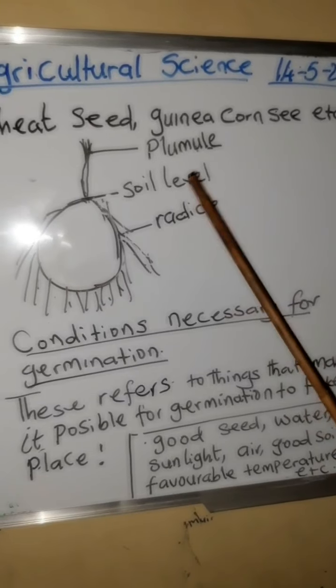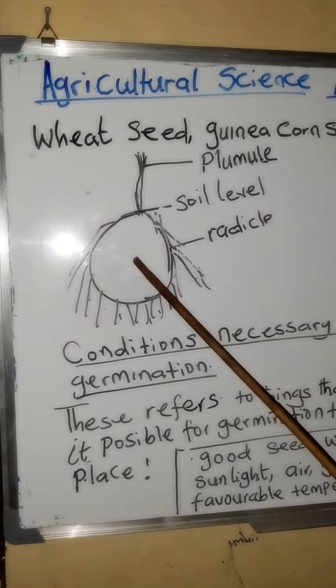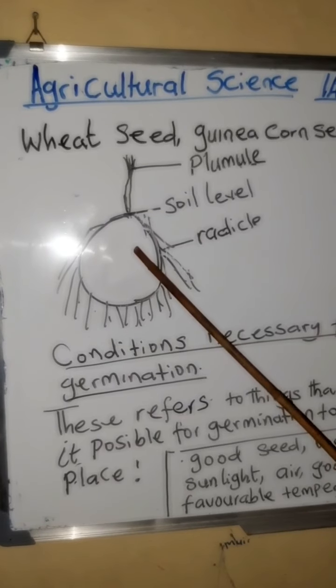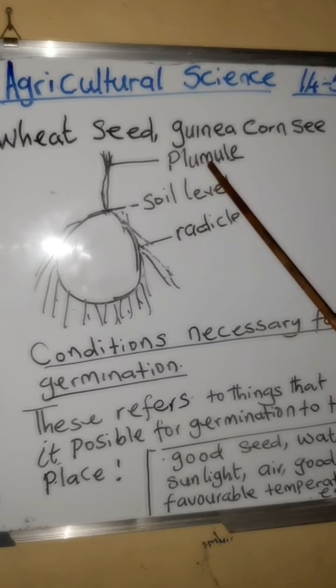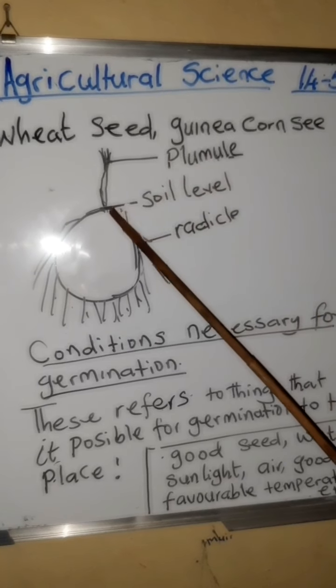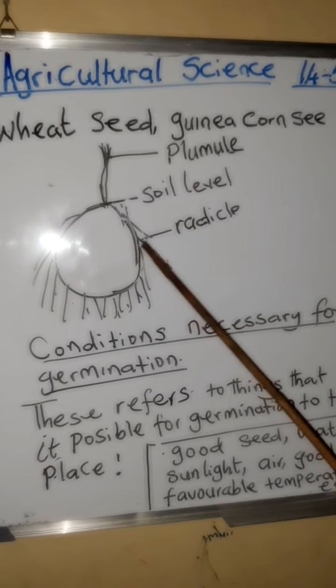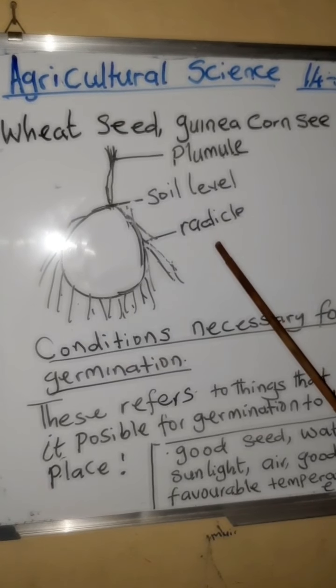Let's look at the drawing of hypogeal germination. In this diagram you have the plumule, the soil level, and the radicle.